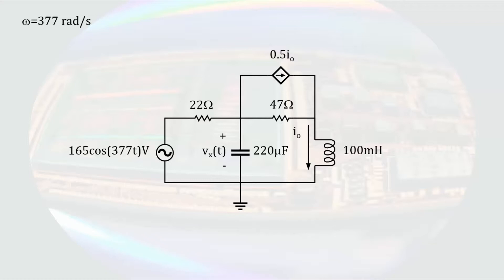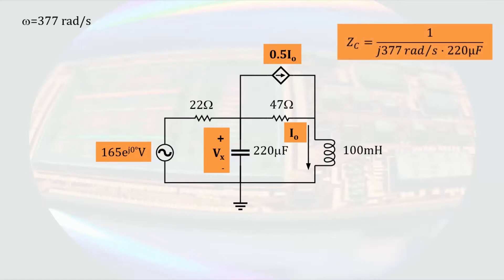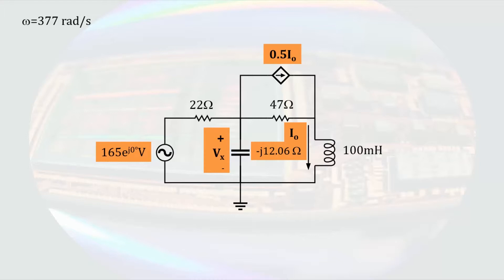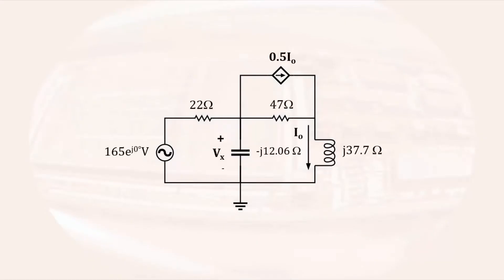The pertinent angular frequency is 377 radians per second, so I will write that off to the side. To begin converting the circuit to the phasor domain, we can write Vx of T as a phasor voltage Vx, and write our controlling parameter I0 of T as I0 in both places that it appears. Since our source does not have a phase angle, we can simply write it as a magnitude with a phase angle of 0 degrees. We will have to write the capacitor as an impedance: 1 over the complex number times the angular frequency times the capacitance, resulting in an impedance of minus J 12.06 ohms. The inductance is converted by taking the complex number times the angular frequency times the inductance, resulting in an impedance of J 37.27 ohms. With all of the elements converted, we now have our circuit in the phasor domain.